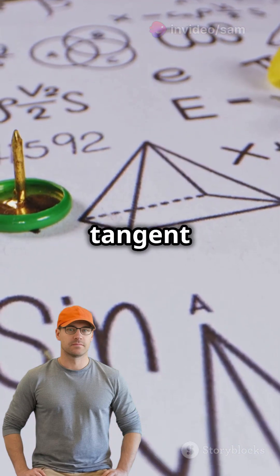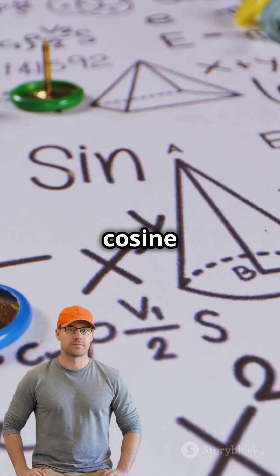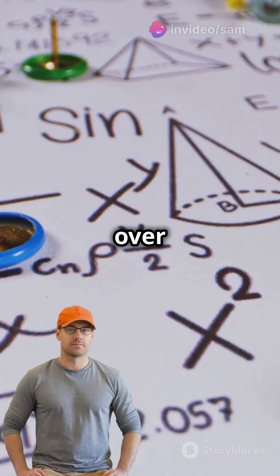Alright, here's the scoop. The tangent function tan x is actually the sine function divided by the cosine function, sin x over cos x.